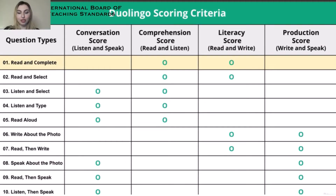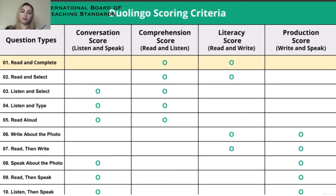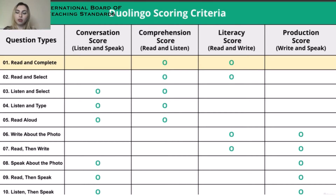Now we have to understand something very important about the exam, which is the scoring criteria — how we distribute the results. We have to understand the four components: conversation, comprehension, literacy, and production. Production is what you create — it's your creative side: writing and speaking.